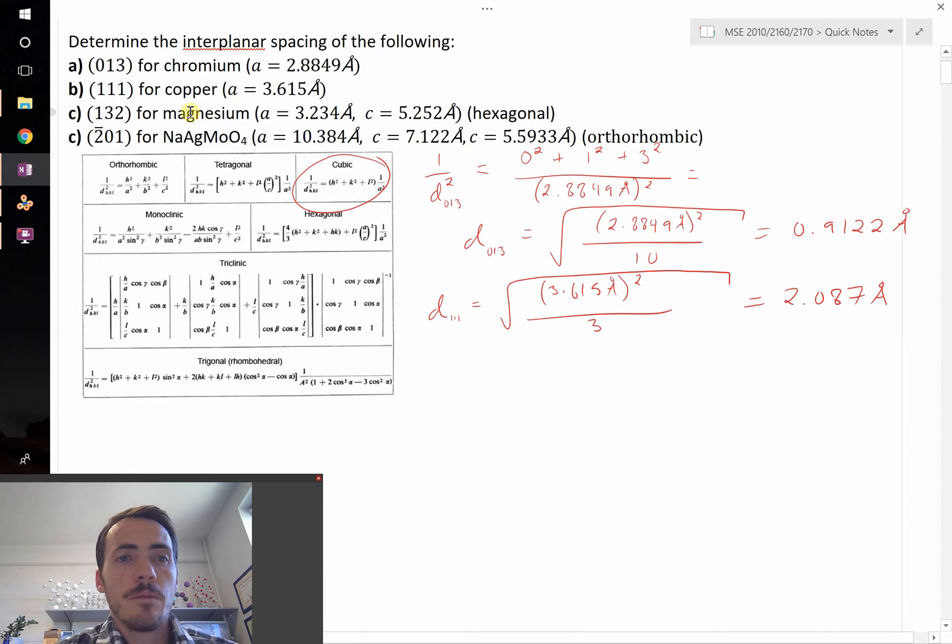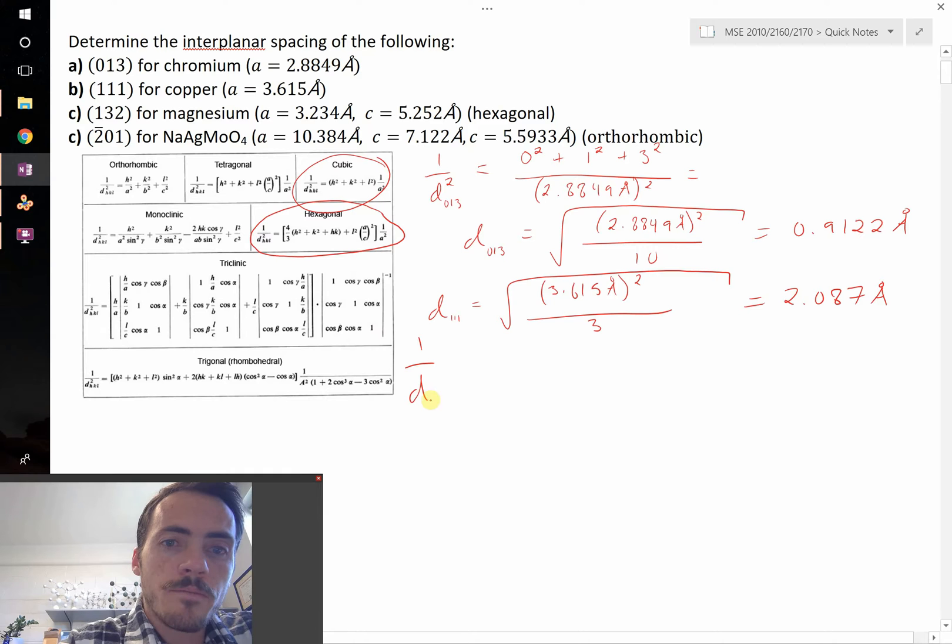Let's do the next one. This is now magnesium. Magnesium is hexagonal close packed, a hexagonal crystal structure, which means we have both A and C lattice parameters. So that's going to change things a little bit. The formula is now more complicated. 1 over D for the 1, 3, 2 is going to be equal to 4/3 multiplied by h squared plus k squared plus h times k, all of this divided by a squared, plus l squared over c squared.